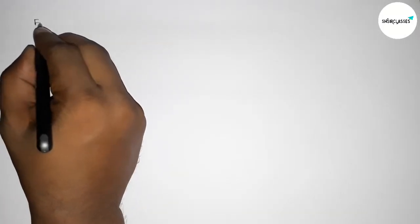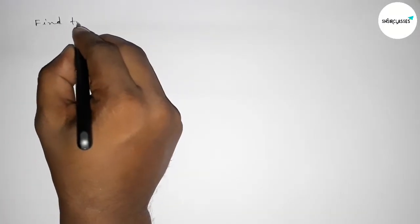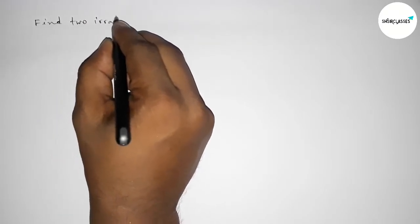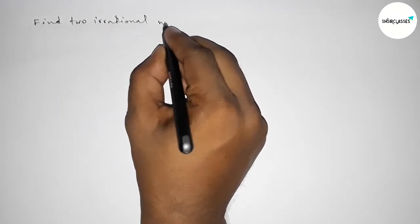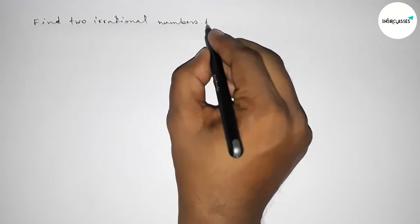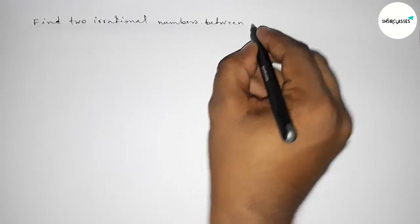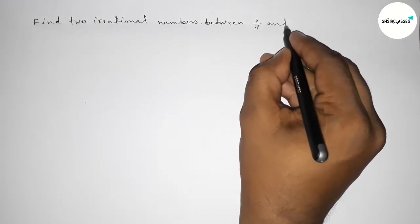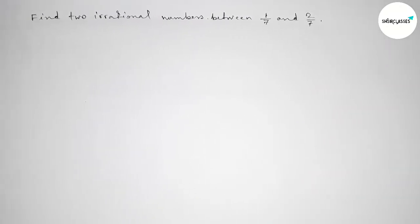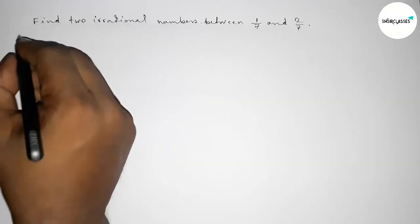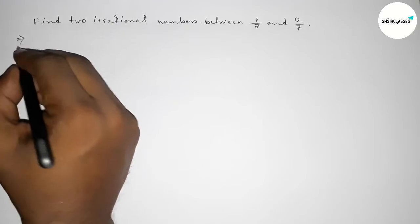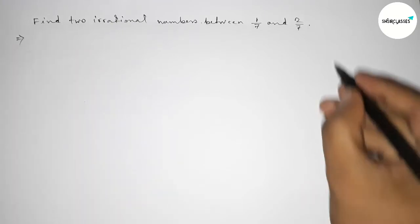Hi everyone, welcome to SI Share Classes. Today in this video, finding two irrational numbers between 1/7 and 2/7 in easy way. So let's start the video. Let's solve this problem.